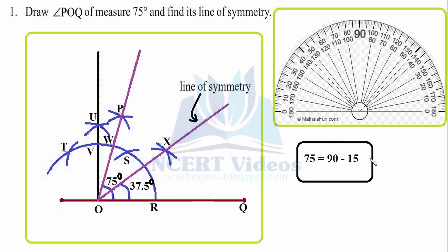The idea is that 75 degrees can be attained by subtracting 15 from 90 degrees. Half of 30 degrees is 15 degrees. So we construct another angle bisector — put your compasses here, draw an arc, then put compasses at S and draw another arc. You get point P, and this will be your 15 degrees.